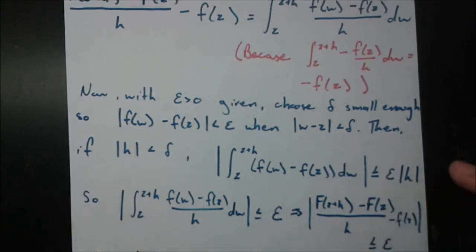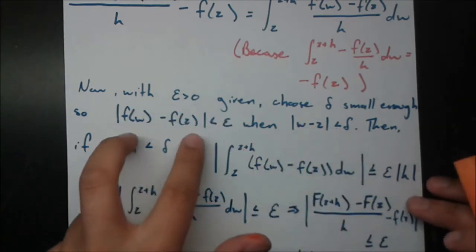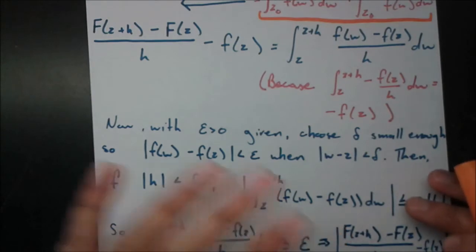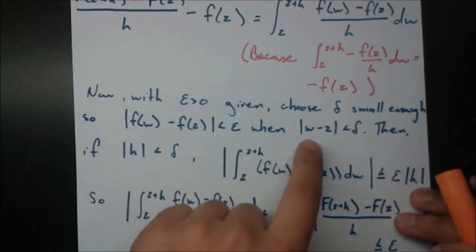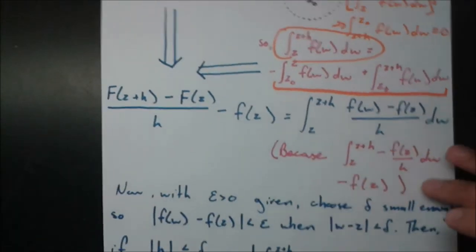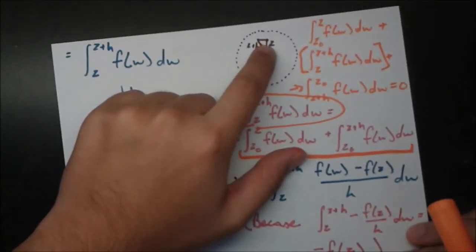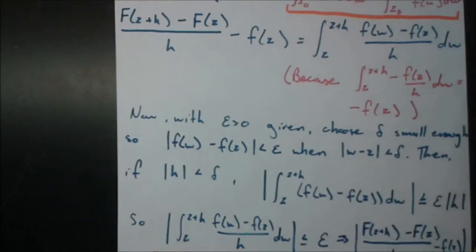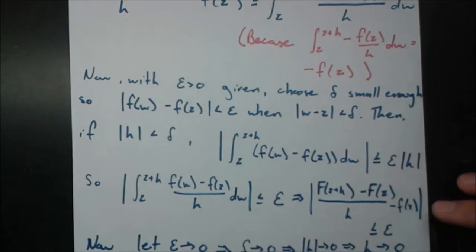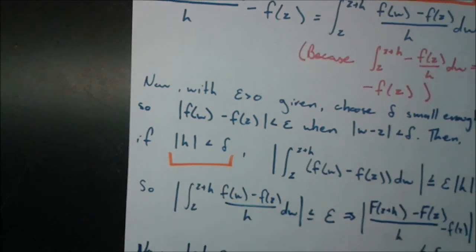Now we use epsilon-delta to finish this off. Given epsilon greater than 0, choose delta small enough so that the modulus of f(w) minus f(z) is less than epsilon when the modulus of w minus z is less than delta — all taking place inside disk omega. We're playing the epsilon-delta game: tell me how close you want me to get to f(z), and I can do that by getting close enough to z. If the modulus of h is less than delta, we proceed.